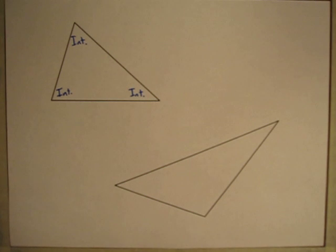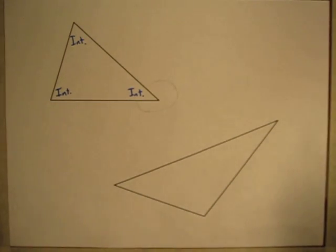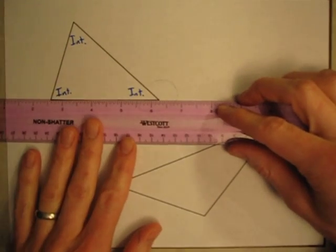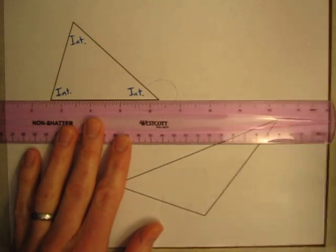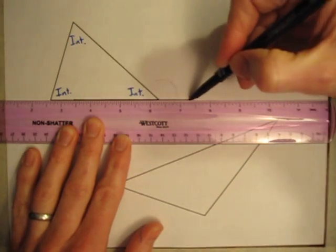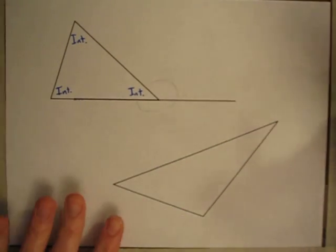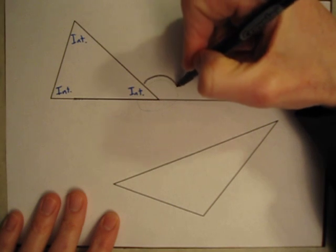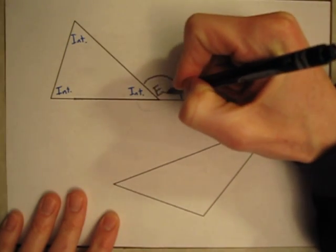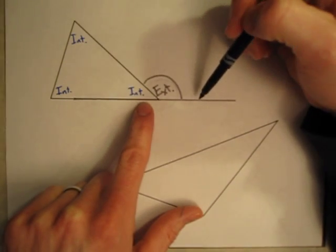If I want to show the exterior angles, it's a little more complicated than just saying it's this angle out here. The definition of an exterior angle is very specific. To draw an exterior angle, you need to pick one side of your triangle and extend that side. The exterior angle is this portion right there — it's the angle created outside the triangle when you extend one of the sides.